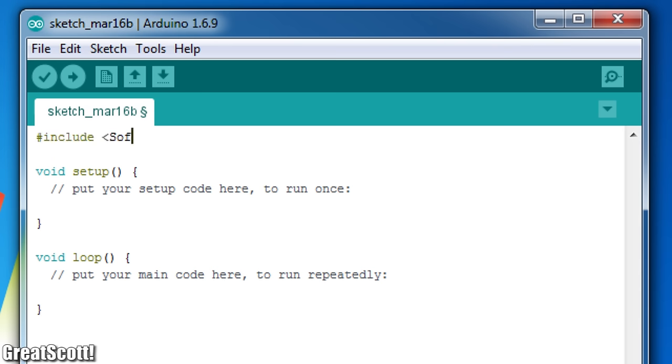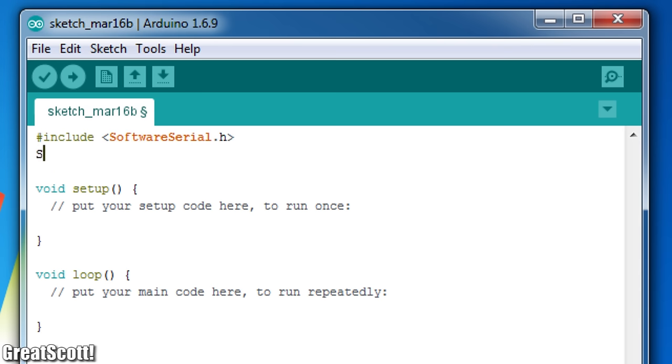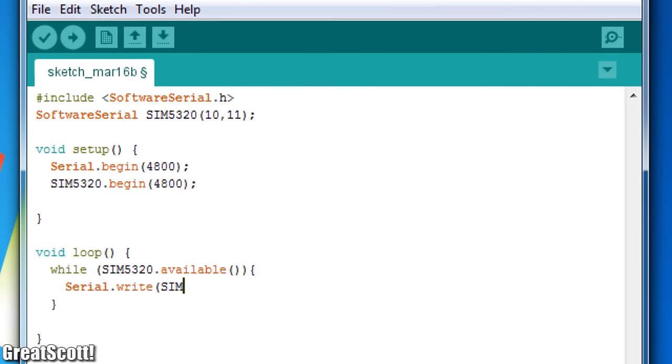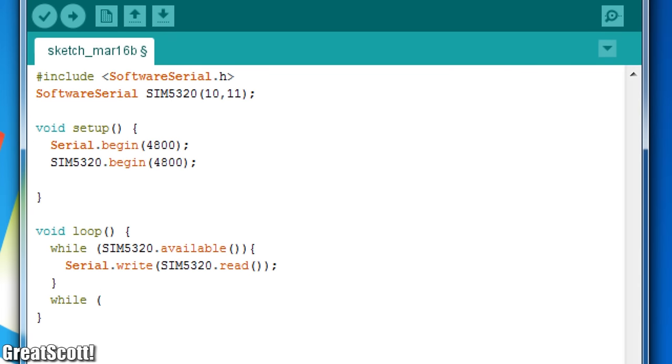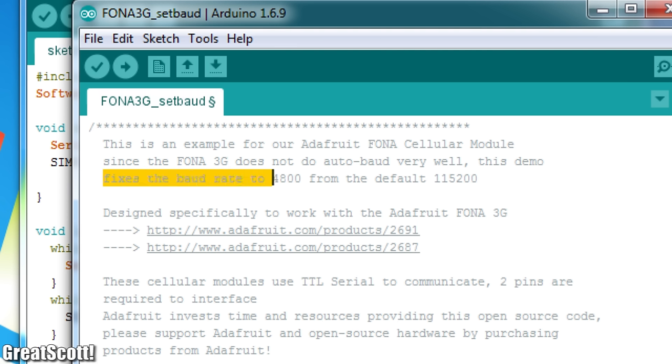As a first test, I used the software serial library to turn pin 10 and 11 into serial data pins and simply directed received data from them to the common serial monitor and vice versa. But before uploading the code, you might have noticed that I set the baud rate for the SIM5320 to 4800, even though its standard baud rate is 115200.